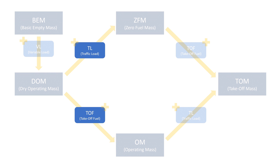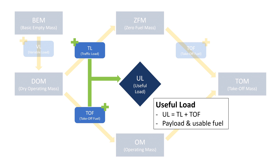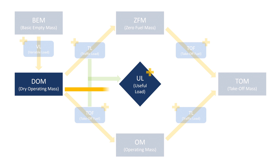Let's go back a few steps one last time. The traffic load and the takeoff fuel combined is known as the useful load. The useful load is usually the mass that's different from flight to flight, since fuel requirements and passenger numbers change. An easy way to find the takeoff mass is therefore by adding it to the dry operating mass.